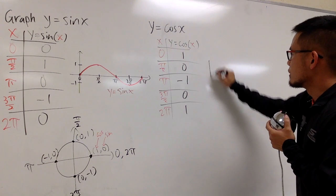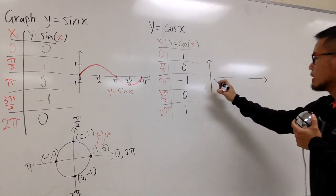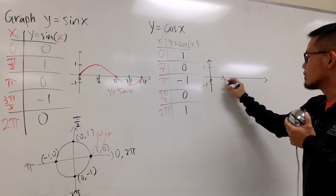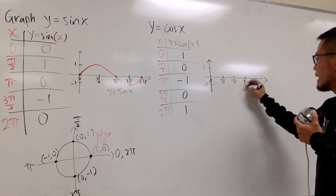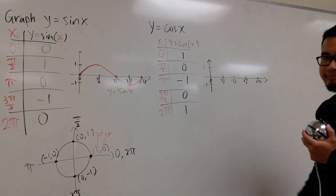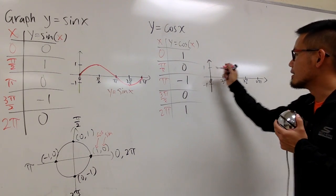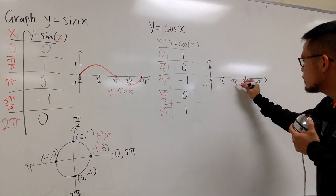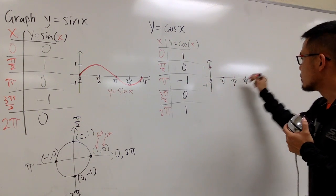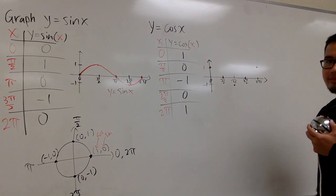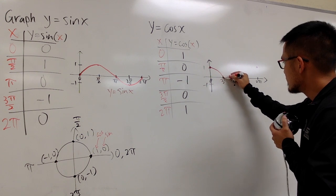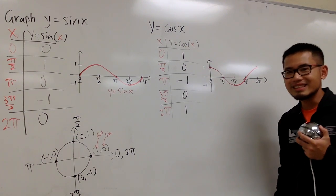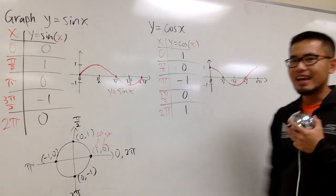Now I'll make the cosine graph. On the y-axis: negative 1 and 1. On the x-axis: 0, pi over 2, pi, 3 pi over 2, 2 pi. Plotting: (0, 1) — cosine starts here. Then pi over 2 comma 0. Then pi comma negative 1. Then 3 pi over 2 comma 0. Then 2 pi comma 1. I'll connect the dots with a wave. As you can see, it takes 2 pi to go from the highest point to the next highest. Here we have the graph of sine x and the graph of cosine x.